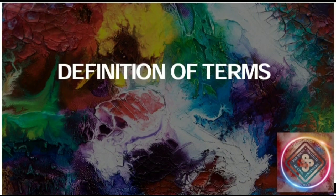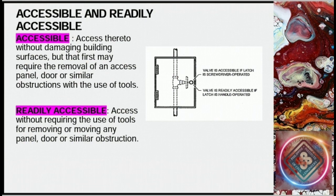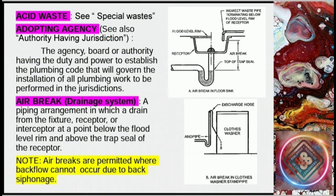All notes and comments added on the slides are highlighted yellow. Accessible: access there too without damaging building surfaces, but that first may require the removal of an access panel, door, or similar structures with the use of tools. Readily accessible: access without requiring the use of tools for removing or moving any panel, door, or similar obstruction. For example, in the picture, the valve is accessible if the latch is screwdriver-operated; the valve is readily accessible if the latch is handle-operated.